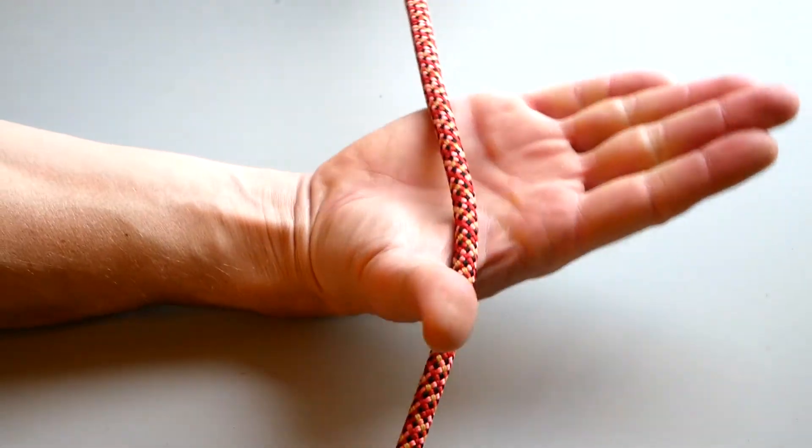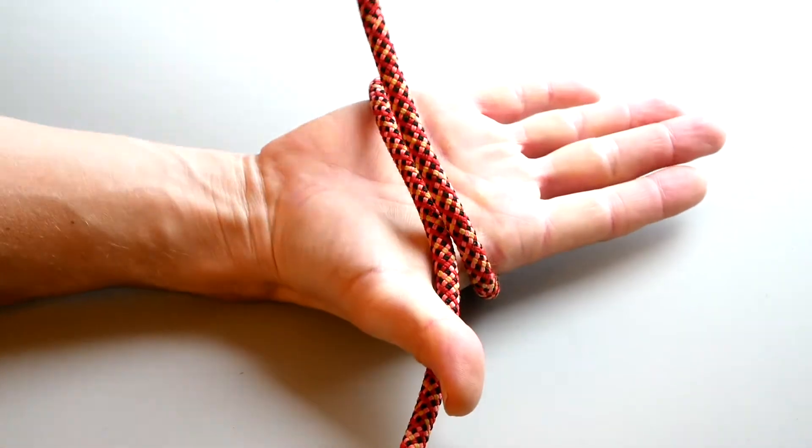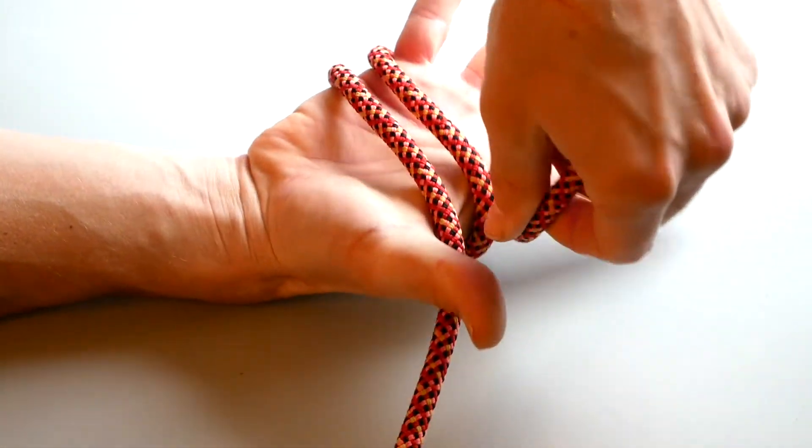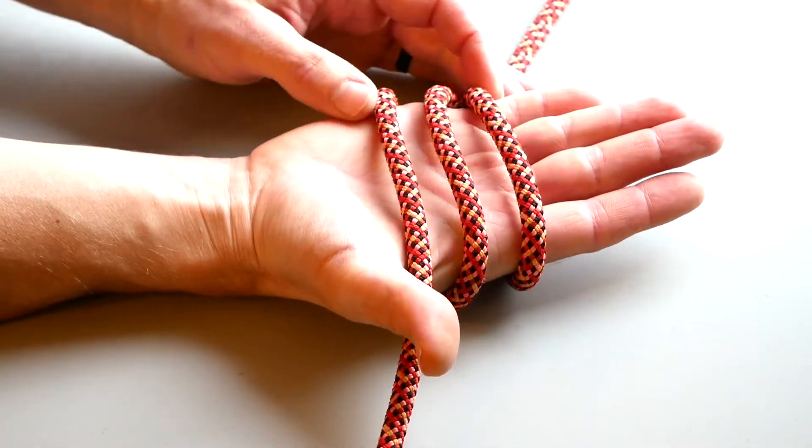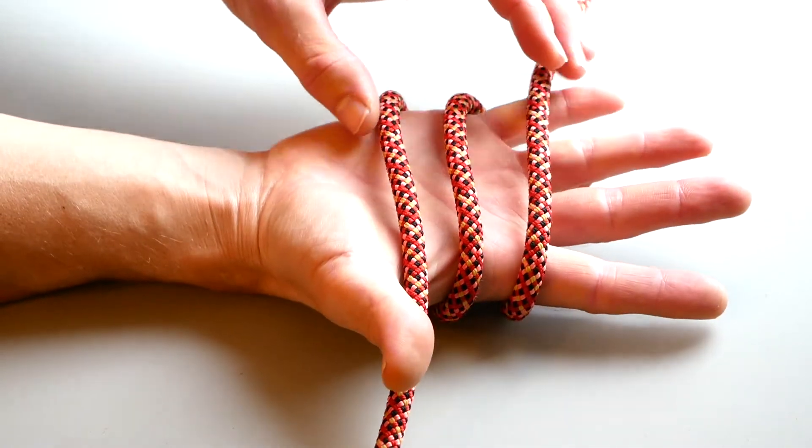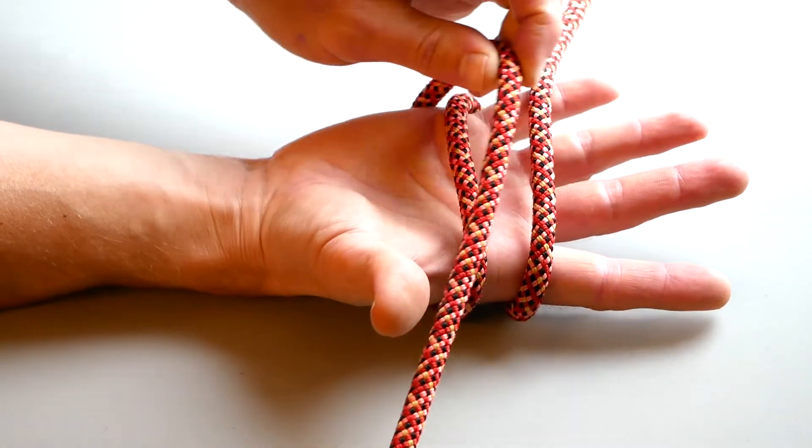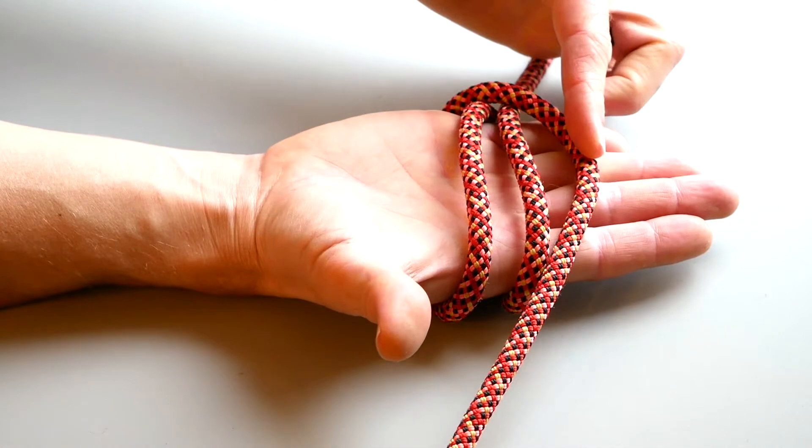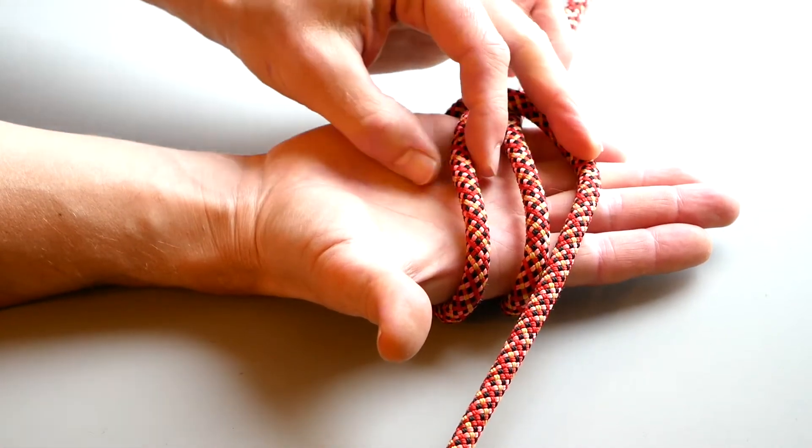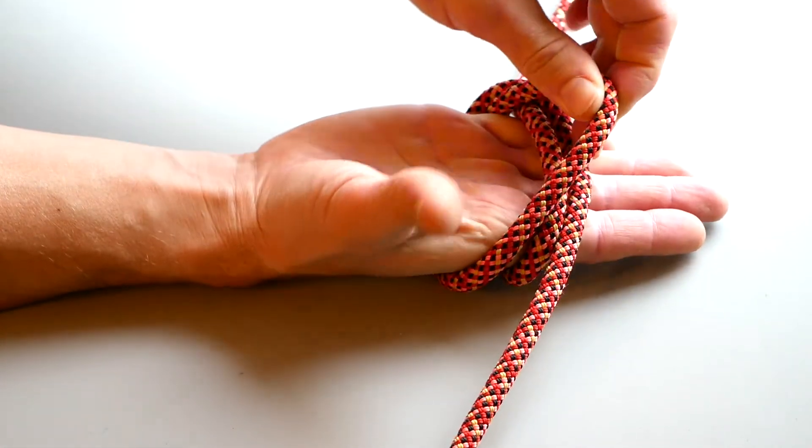Start by wrapping the rope three times up the palm of your hand. Once you have three lines across your palm, take the bottom line and move it to the top. Then take the new bottom line and pass it to the top again.